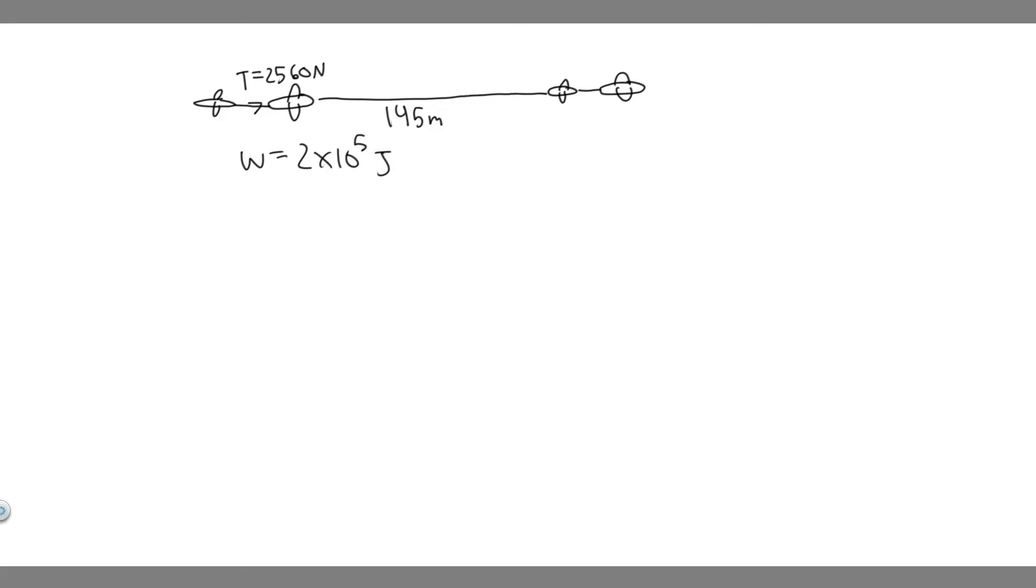In this problem, we're told a small plane tows a glider at a constant speed and altitude. If the plane does 2 times 10 to the 5 joules of work to tow the glider 145 meters, and the tension in the tow rope is 2,560 newtons, what is the angle between the tow rope and the horizontal?